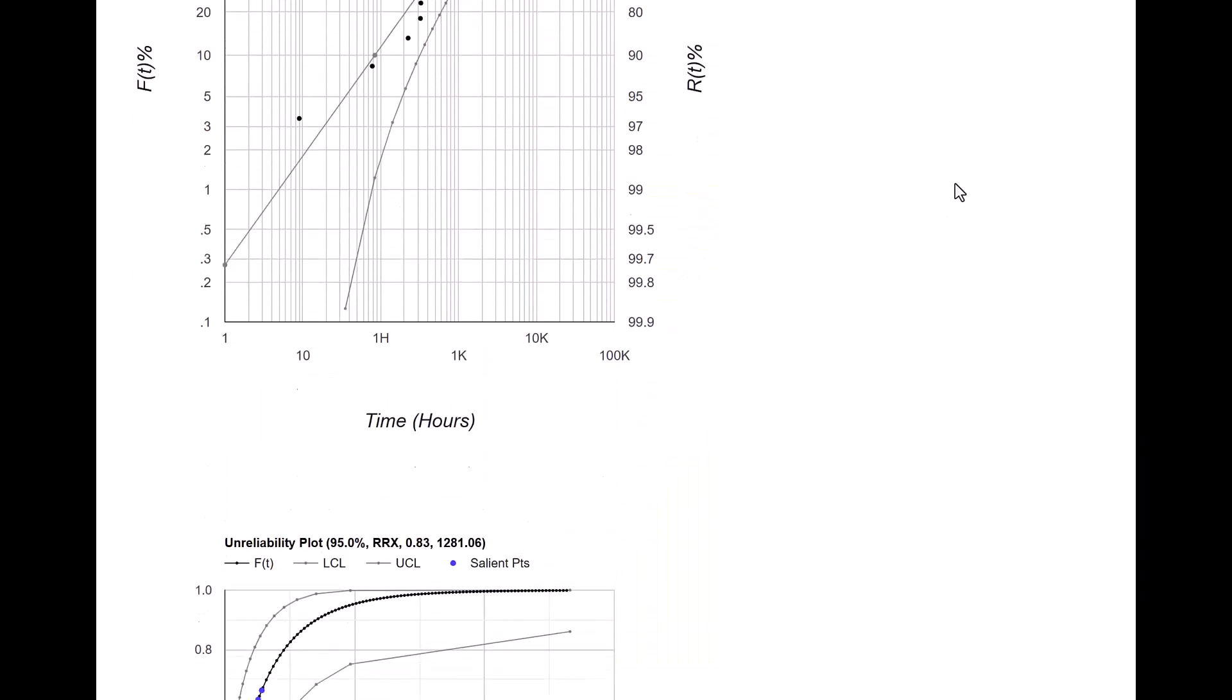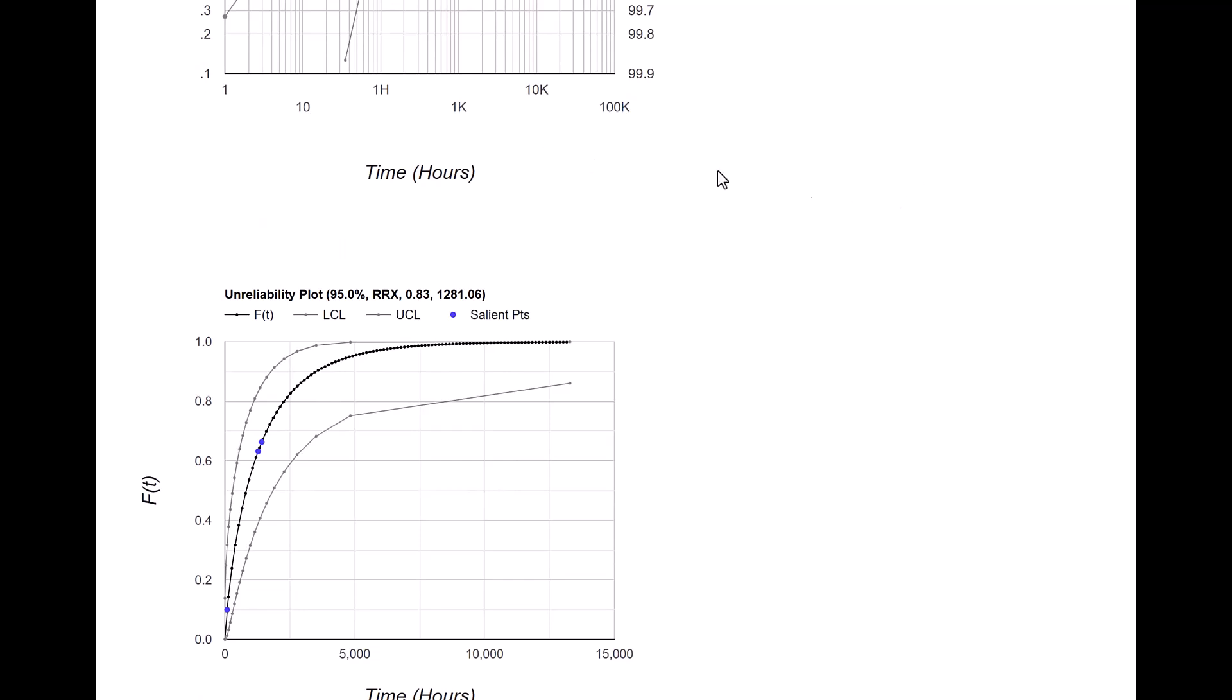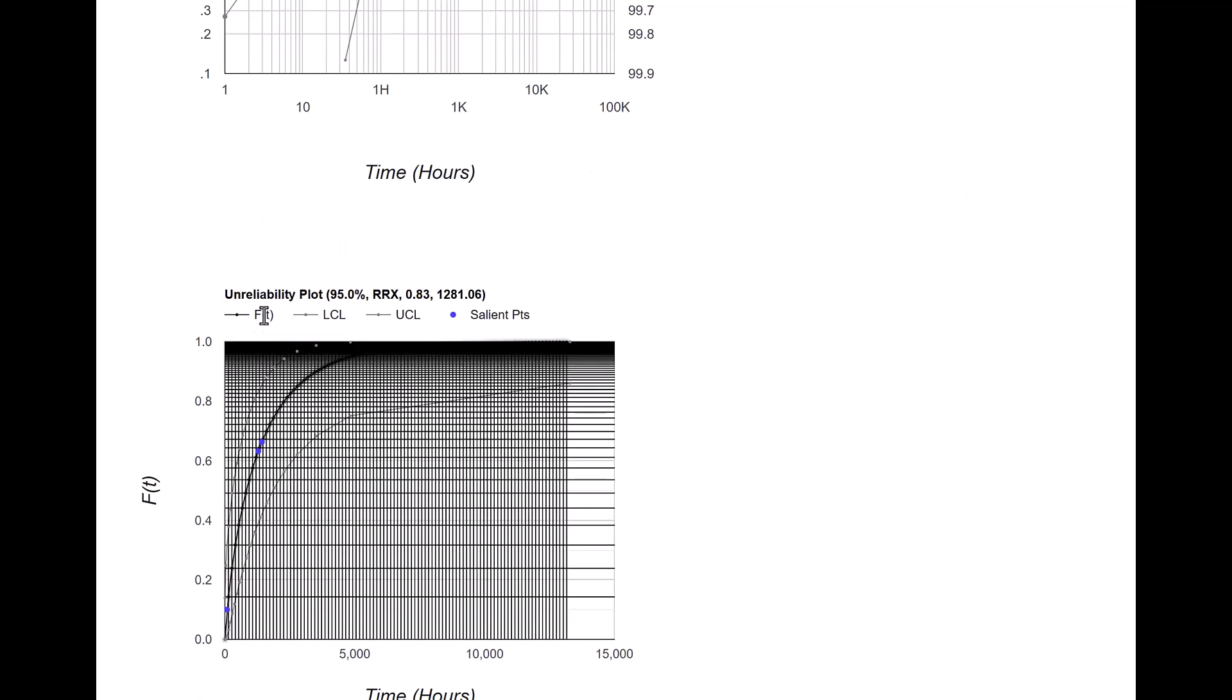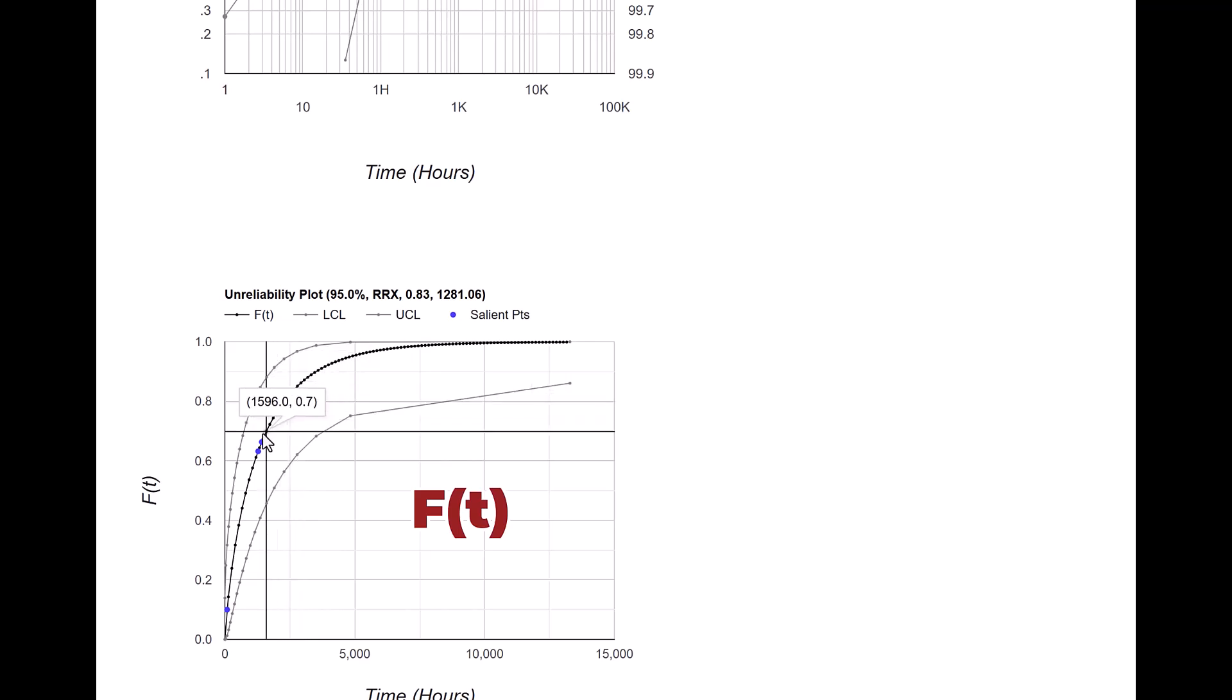If we scroll down further we can see the unreliability plot or capital F(t). The middle graph is the estimated value of F(t) and then there are confidence intervals, upper confidence limit and lower confidence limit.